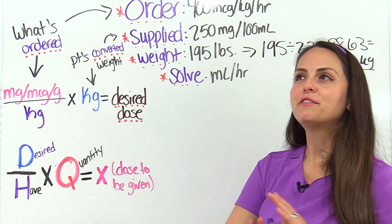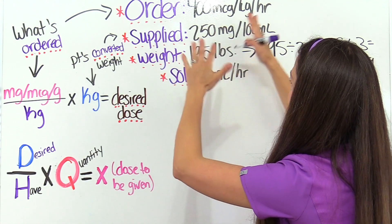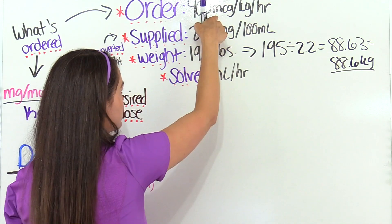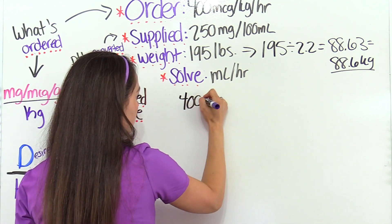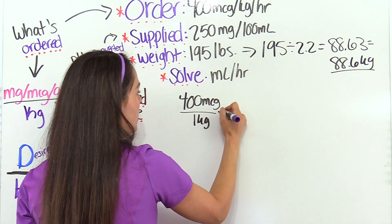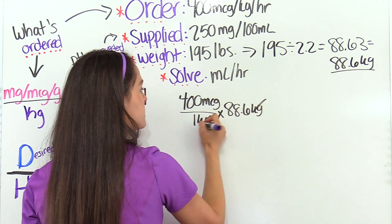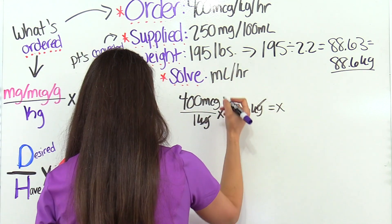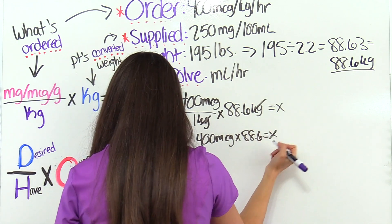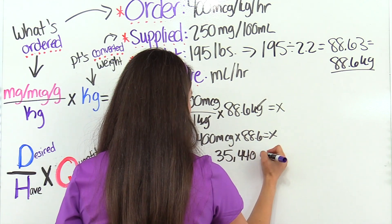This is a multiple-step problem. First, we figure out the desired dose based on the patient's weight. So plugging in: 400 micrograms over one kilogram — because for every kilogram they weigh they need that — multiplied by 88.6 kilograms. Kilograms cancels out. 400 divided by one is 400, times 88.6 gives us 35,440 micrograms — that is the desired dose this patient needs to get.